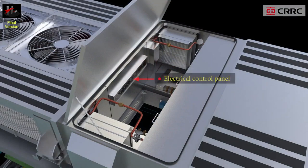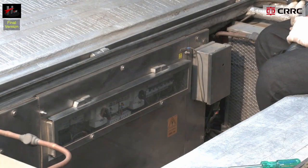The electrical control panel is located in the mixed air compartment. All the electrical switchgear and the microcontroller are installed in the control panel.